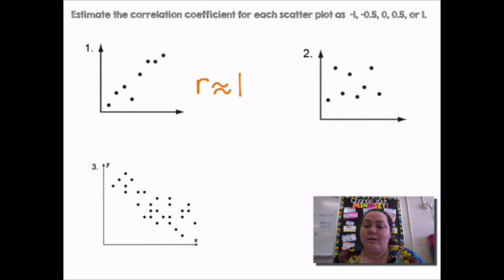The second one, it's kind of hard to tell if it's going up or down, so if it's positive or negative, and it's pretty spread out, so we would say that correlation coefficient is close to 0. The third one, it's very obviously negative, it's going down, but it's kind of spread out. So we're going to say it's negative 0.5.